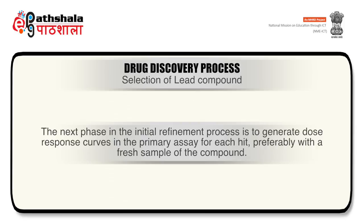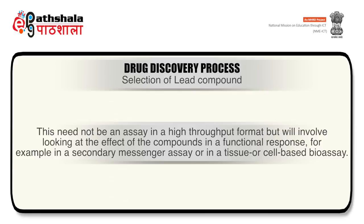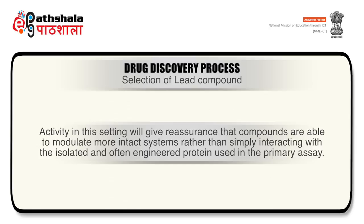The next phase in the initial refinement process is to generate dose-response curves in the primary assay for each hit, preferably with a fresh sample of the compound. With reliable dose-response curves generated, the stage is set to examine the surviving hits in a secondary assay for the target of choice. This need not be a high-throughput format but will involve looking at the effect of the compound in a functional response — for example, in a secondary messenger assay or in a tissue or cell-based bioassay. Activity in this setting gives reassurance that compounds are able to modulate more intact systems rather than simply interacting with the isolated and often engineered protein used in the primary assay.